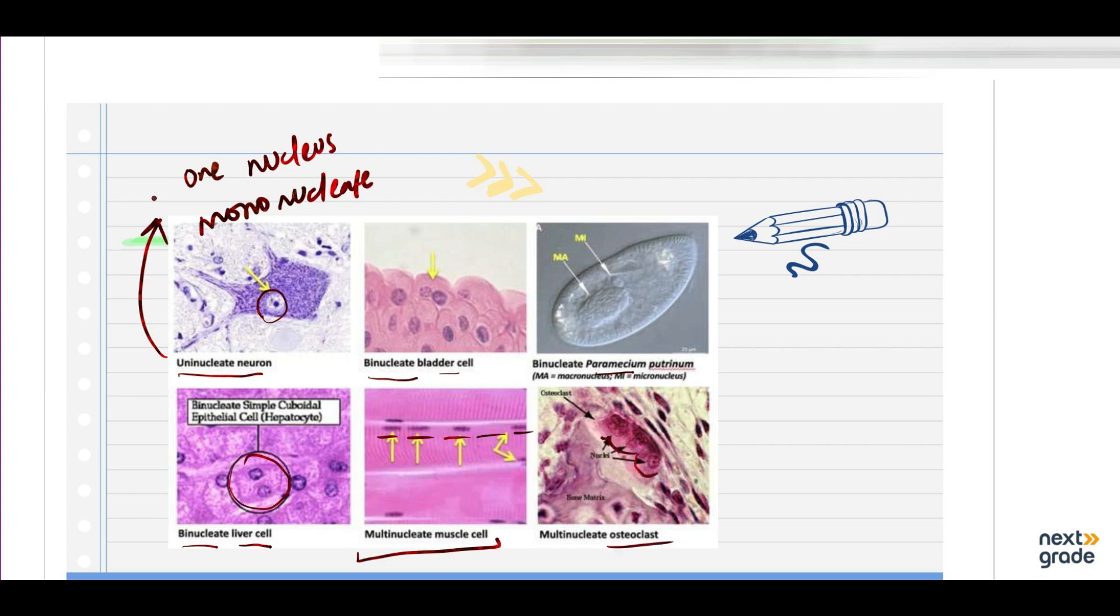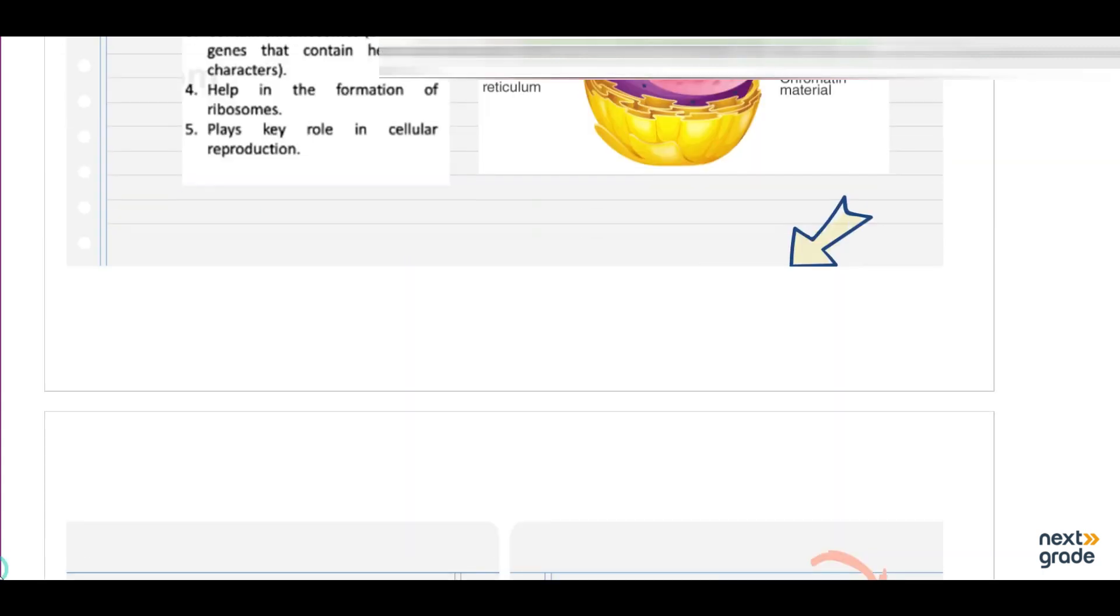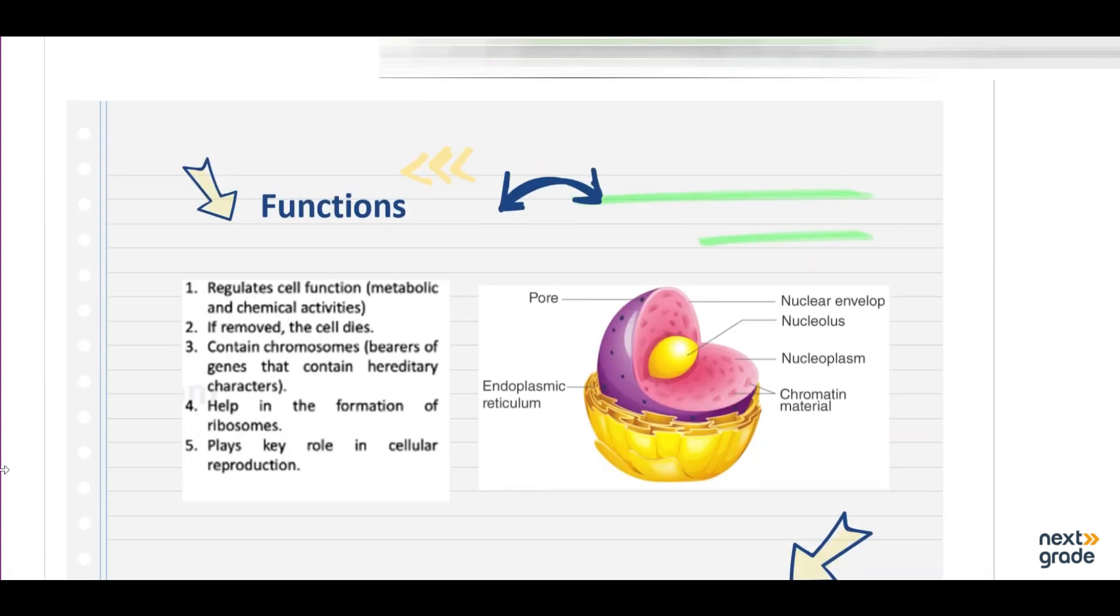Within the nucleus you have seen the chromatin network. Look at this, here this is chromatin material. You have also seen nucleoplasm. Similar to this, the nucleolus as you see. This nucleolus, here is nuclear envelope and these are pores. And this endoplasmic reticulum is also shown.